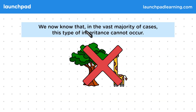We now know that in the vast majority of cases, this type of inheritance cannot occur. Through experimentation, we have discovered that in most cases, inheritance doesn't happen this way. We know it's not really correct due to increased research and evidence leading to gene theory, a theory covered elsewhere in the course.